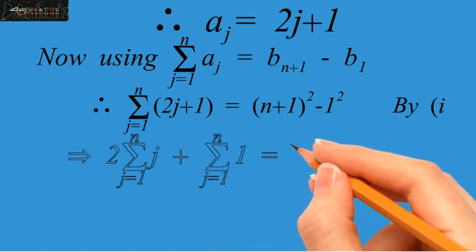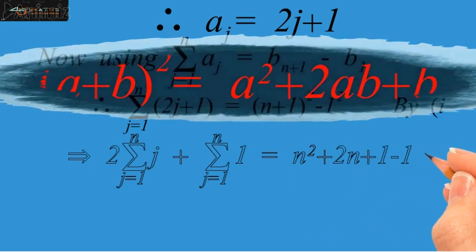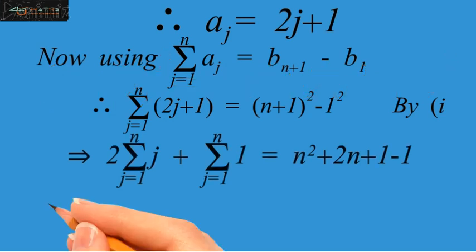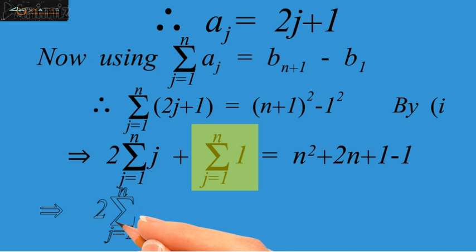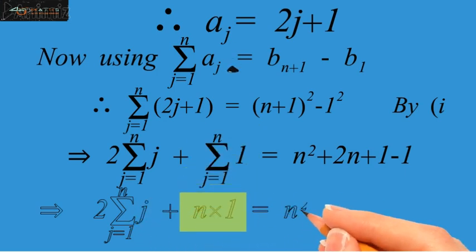Now, in the left hand side, summation j equals 1 up to n, 1 is equal to n times 1, because by the formula.